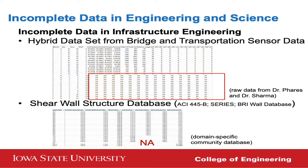Incomplete data is everywhere — in engineering, science, social science, industry, and survey data. For example, here I show an infrastructure engineering dataset. Infrastructure engineering collects a lot of data using various sensors. This table shows an example of a hybrid dataset from bridge and transportation sensors, thanks to Dr. Faris and Dr. Sharma.